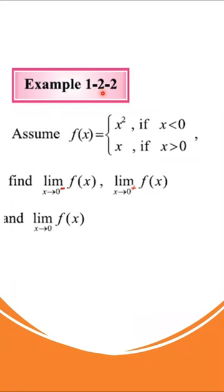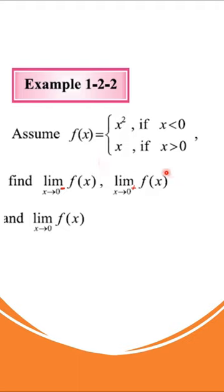Let's move into example two. Assume f of x is equal to the following piecewise conditions: if x is negative, then f of x is equal to x squared. And if x is positive, then f of x is defined as x.